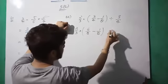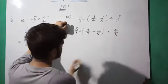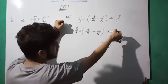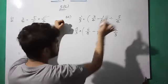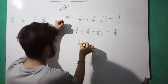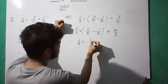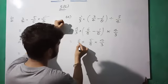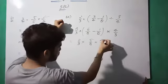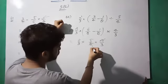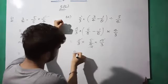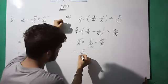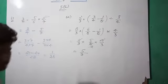We can change division to multiplication: multiply with four by three. So we have two by three into five by eight, into four by three. Four and two cancel, giving us five upon three into three, which is five upon nine. So five upon nine is the answer.